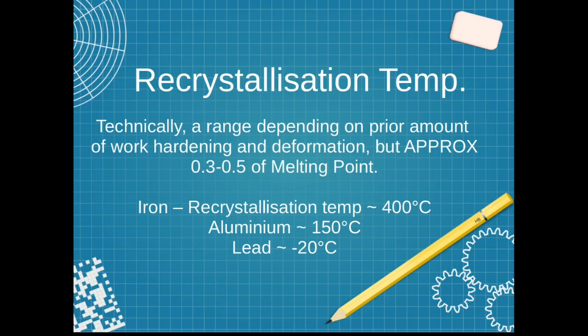In aluminium, at about 150 degrees, the atoms restore themselves to equilibrium position and work hardening no longer occurs.